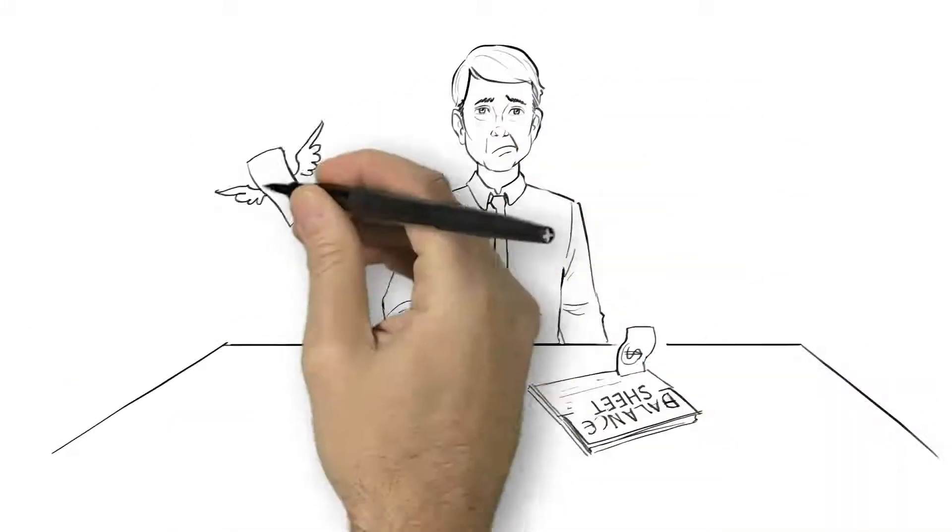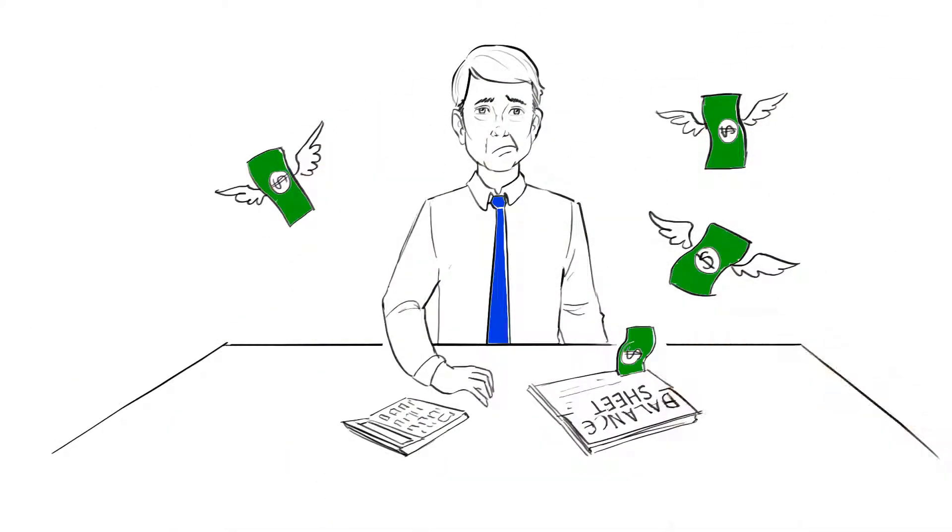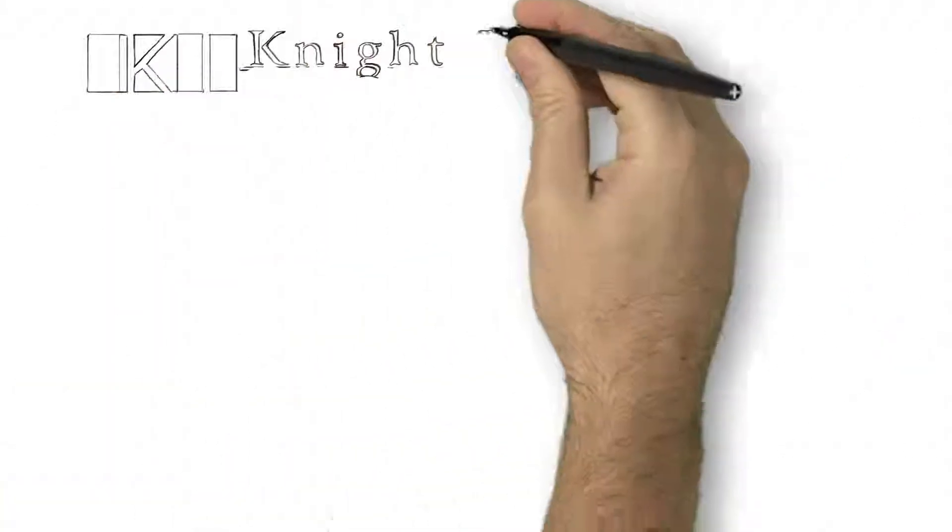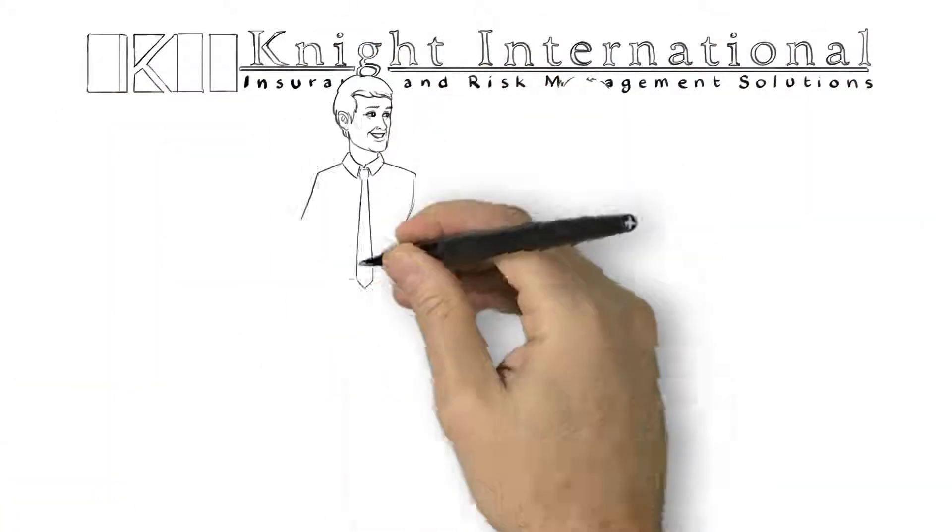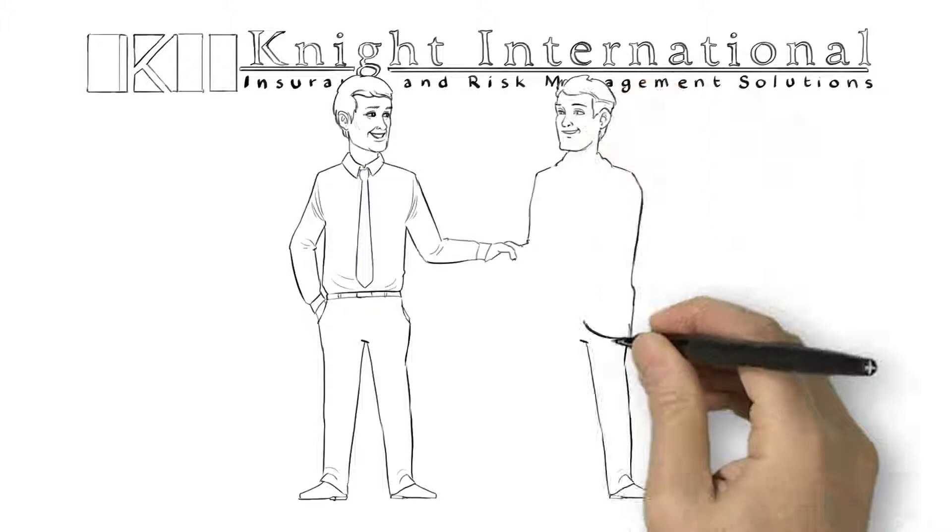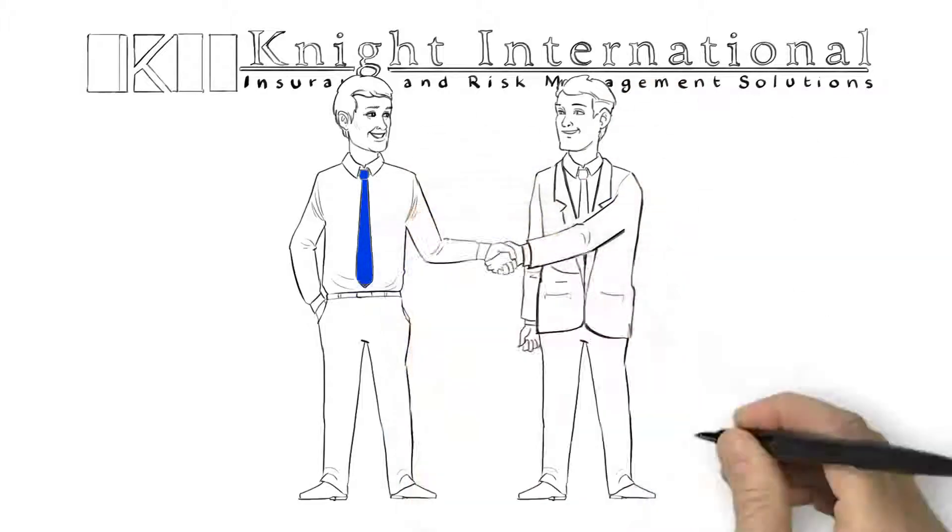Consequently, JSP was forced to self-insure these risks. Until he met Knight International, a professional insurance brokerage firm specializing in insurance and risk management solutions.